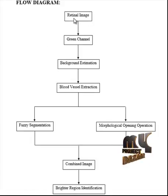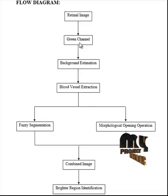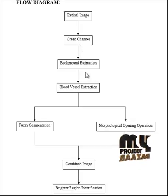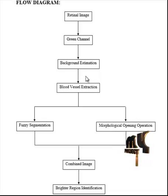The retinal images are obtained from the dataset. From the obtained retinal images, the green channel alone is extracted for further processing. The green channel of the retinal images contains the most important information regarding the optical disk content of the regions in the input images. After extraction of the green channel, the background region is estimated from the retinal images in order to remove the unnecessary regions present in the retinal images.